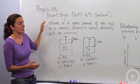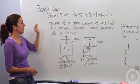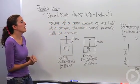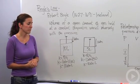Boyle's Law was discovered by Robert Boyle, coincidentally, in the 1600s. He was in Ireland doing chemistry. He discovered that the volume of a given amount of gas held at a constant temperature varies inversely with the pressure.